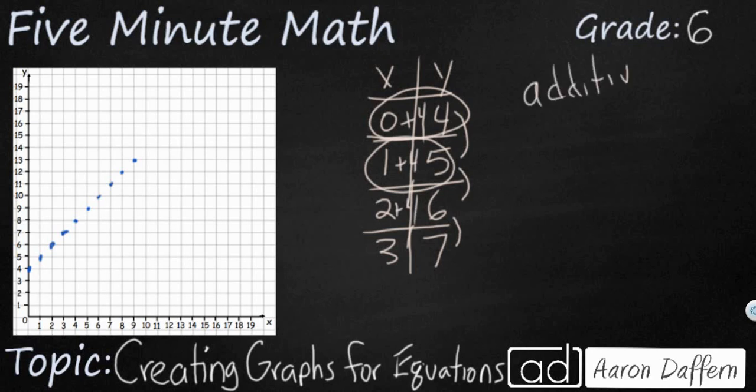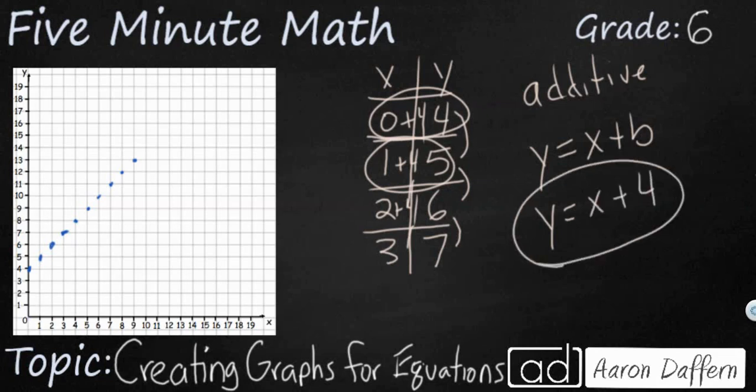And additive equations have much shallower slopes. So this is going to be y equals x plus b. So this b is our constant. So all we're doing is we're taking our x and we're adding 4, and that's going to get us our y every time.